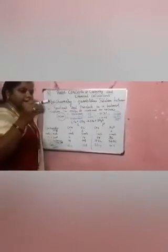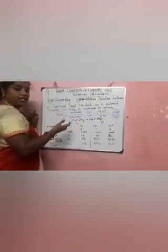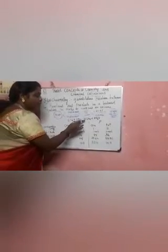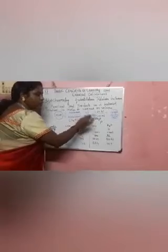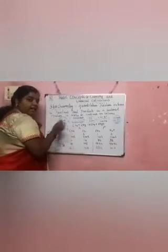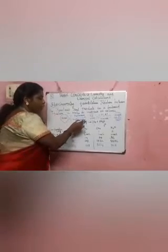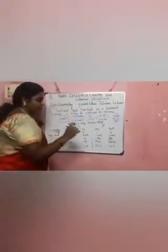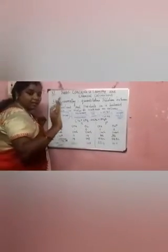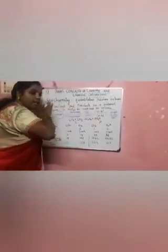Let's see with an example. CH4, methane, reacts with oxygen — obviously it's a combustion process. So CH4 + 2O2 gives carbon dioxide plus water molecules. This is a balanced equation: in the reactant side there is one carbon, and in the product side there is one carbon. How many oxygens are present? Four oxygens — here O2 and here 2O, so 2 plus 2 equals 4. This is called a balanced equation, where both reactant and product sides have the same number of molecules.